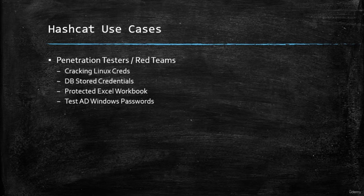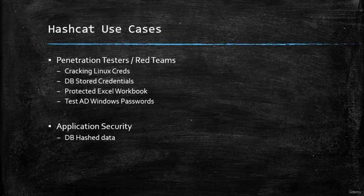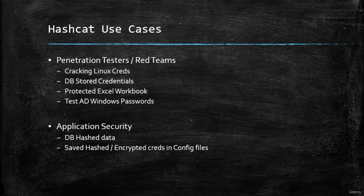People who work in application security test web applications before they're deployed into production. They can use Hashcat if they find an SQL injection vulnerability. Also, application security analysts can use Hashcat to test the encryption algorithm used for saving credentials in configuration files. Now you can see in practice the importance of this tool in the security field.